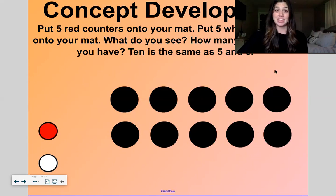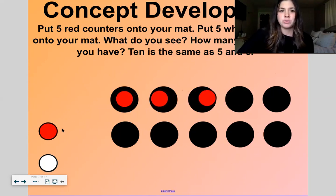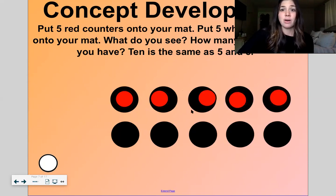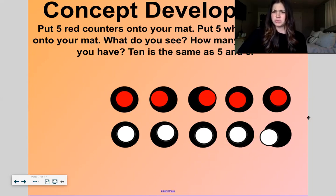Now if you have something to count with, get that out and we're going to do some counting on this mat. We're going to put five counters out on our mat on this row, just like we just did with the bricks. One, two, three, four, five. Now let's take five white counters. One, two, three, four, five. What do you see?